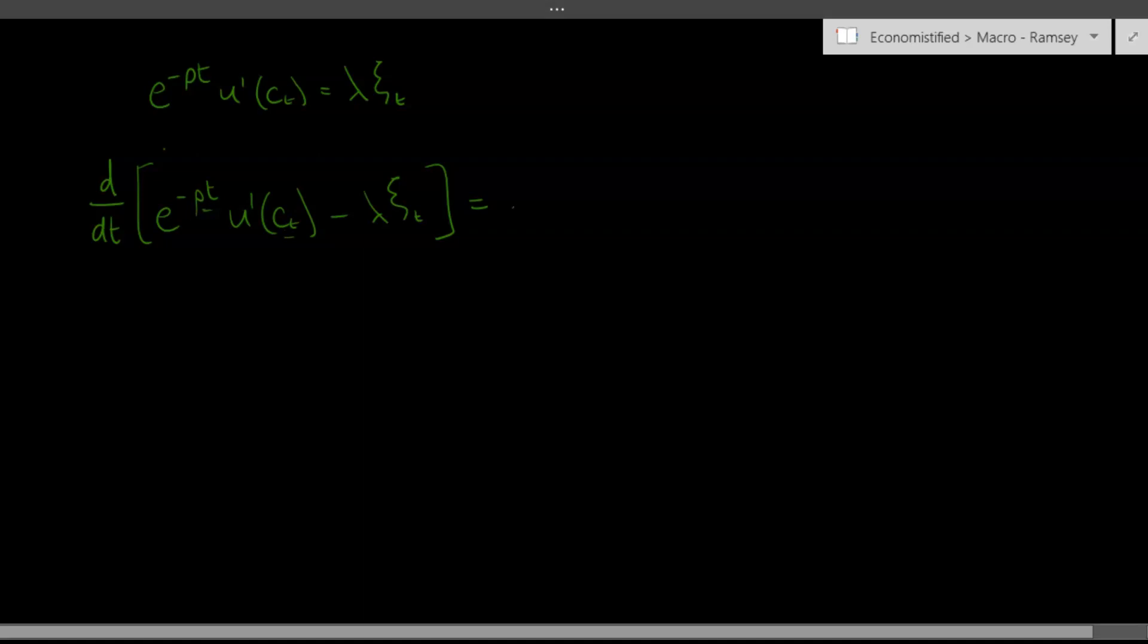So we use the product rule here. So the first term becomes minus rho times e to the minus rho t times u prime of ct, plus e to the minus rho t times u prime prime of ct, and then we differentiate the function and just get ct dot, the derivative of c with respect to time.